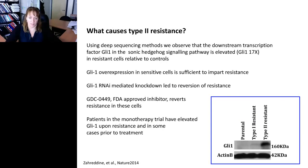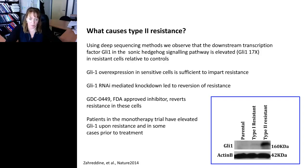What is causing this type 2 resistance? Using deep sequencing methods, we observed GLI-1, the glioma-associated protein 1, being highly elevated by 17-fold, confirmed both at the western level and by qPCR. We've been able to show that GLI-1 overexpression in sensitive cells is sufficient to impart resistance, GLI-1 RNAi-mediated knockdown led to reversion of resistance, and vismodegib, also known as GDC-0449, an FDA-approved inhibitor of GLI-1, reverts resistance in our cells. Patients in the trial have elevated GLI-1 upon resistance, and in some cases prior to treatment.